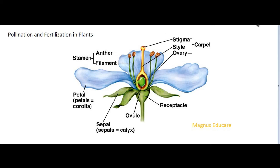We are going to start the chapter on pollination and fertilization in plants — a very important topic in botany. Whenever we are studying botany, this chapter is very important: how pollination occurs in plants and how fertilization occurs in plants. Firstly, we have to see the structure of a flower.